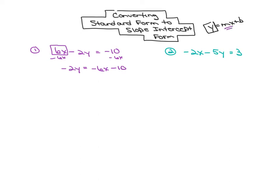Next, to get y all by itself, y is being multiplied by negative 2. So I'm going to divide the entire side by negative 2.